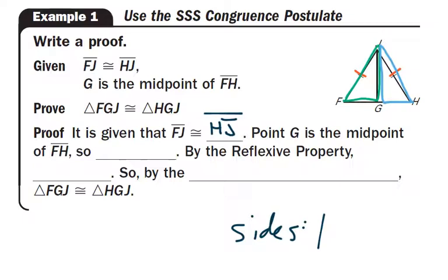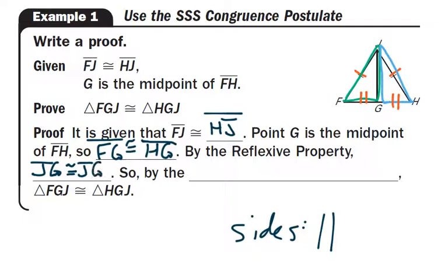Here goes our proof. It is given that segment FJ is congruent to segment HJ — that's one of our sides. Since point G is the midpoint of FH, that means segment FG is congruent to segment HG. Mark that on the picture — there is our second set of sides. By the reflexive property, segment JG is in both triangles, so segment JG is congruent to segment JG — mark that in the picture. That is our third pair of sides. By the Side-Side-Side Congruence Postulate, we can say that triangle FGJ is congruent to triangle HGJ.